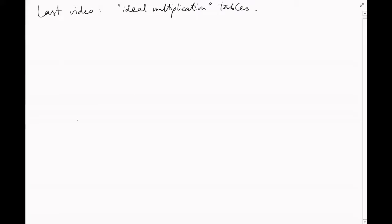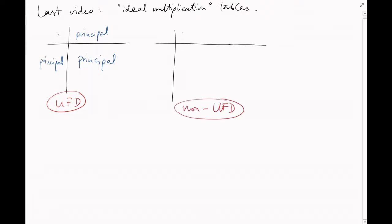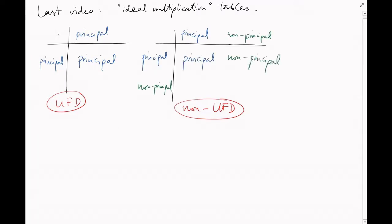At the end of last video, I drew a conjectured ideal multiplication table. Inside a unique factorization domain, it just looks like this — there are only principal ideals, which act basically like numbers, and when you multiply two principal ideals, you get a principal ideal. Inside a non-unique factorization domain, the story's more complicated. Three boxes of this multiplication table are easy to fill in, but what about the fourth?